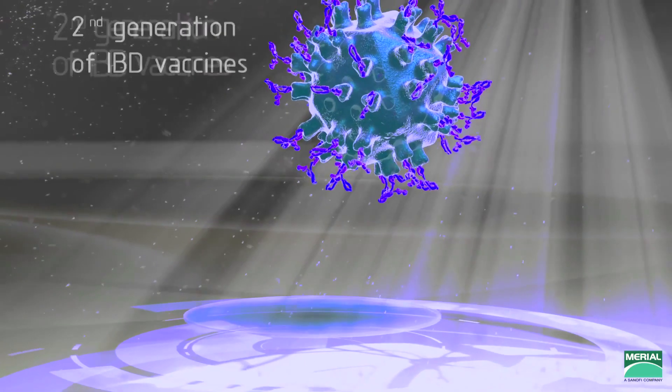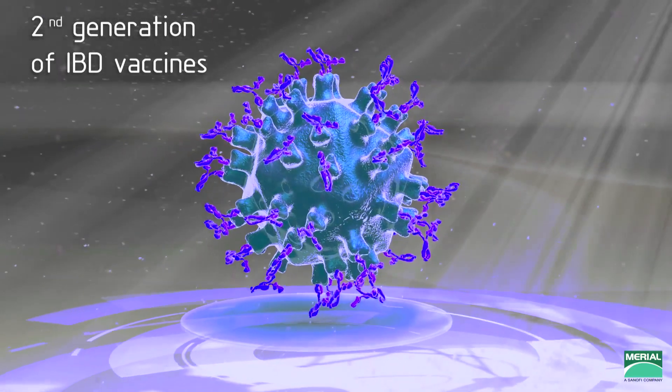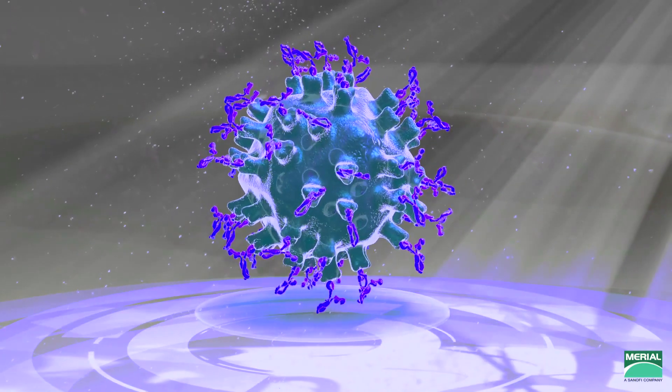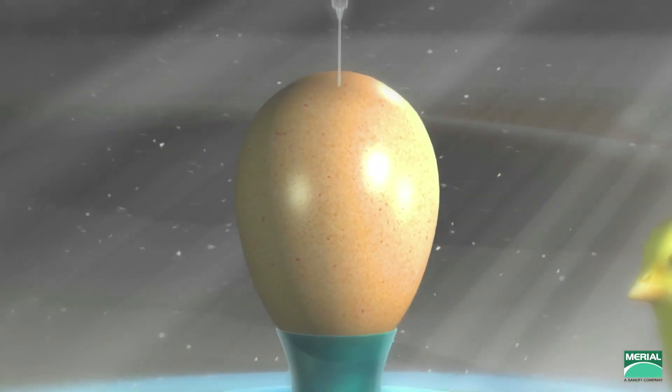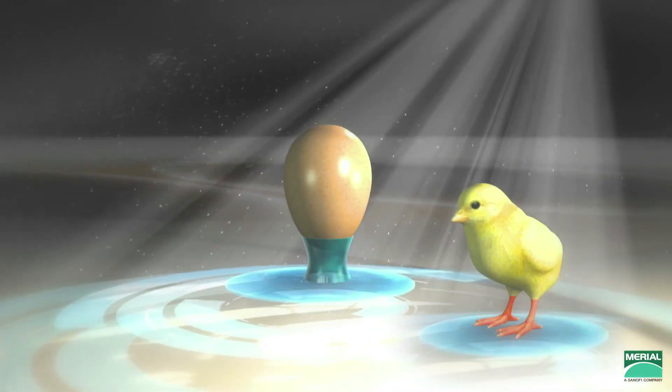The immune complex is the second-generation IBD vaccine, comprising a live intermediate plus vaccine strain bound to antibodies. The main advantage of this vaccine is its administration at the hatchery, either in ovo or subcutaneously.